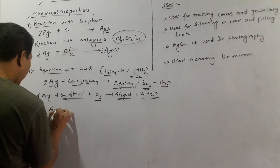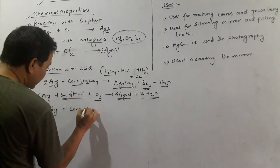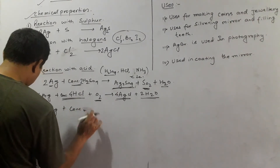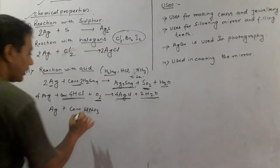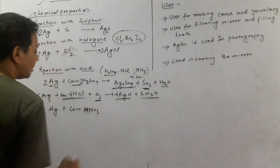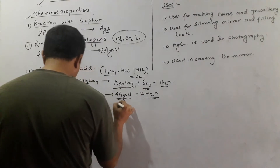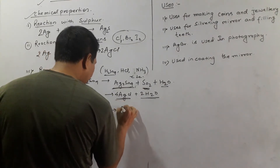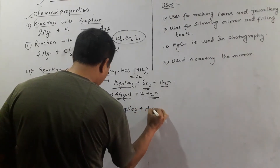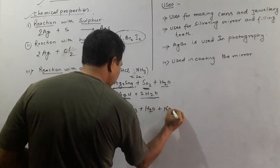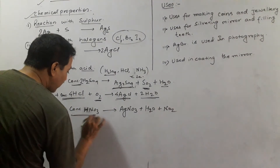Then what happens with nitric acid? When silver reacts with concentrated nitric acid, it produces silver nitrate plus water plus nitrous oxide (N₂O).